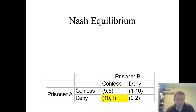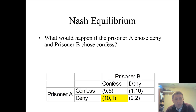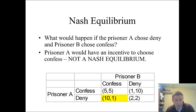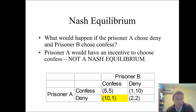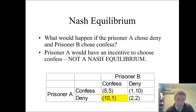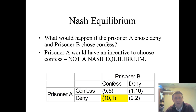We see the same thing if prisoner A is choosing deny and prisoner B is choosing confess. Prisoner A gets 10 years in prison, but by switching, prisoner A could get only 5 years in prison. 5 years is much better than 10 years — prisoner A wants to switch from deny to confess. So this is not a Nash equilibrium either.